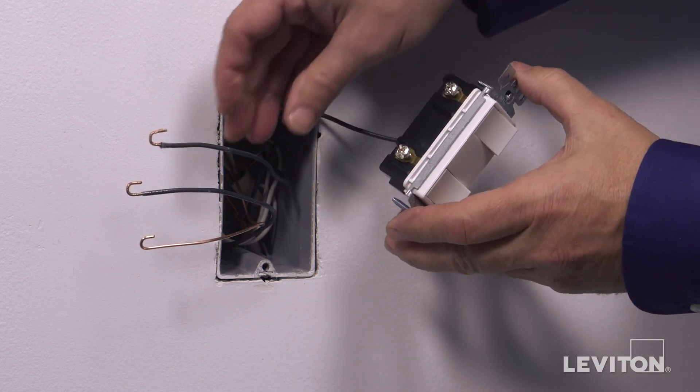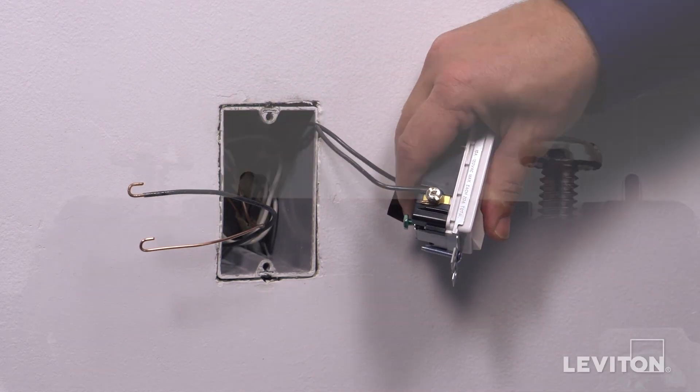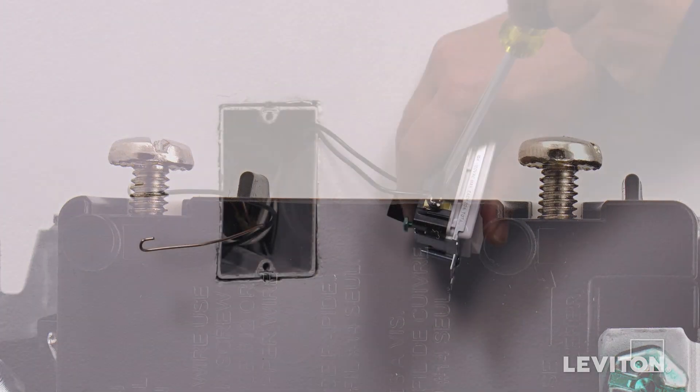Loop one black wall box load wire clockwise three-quarters of a turn around a silver terminal screw. Tighten firmly.